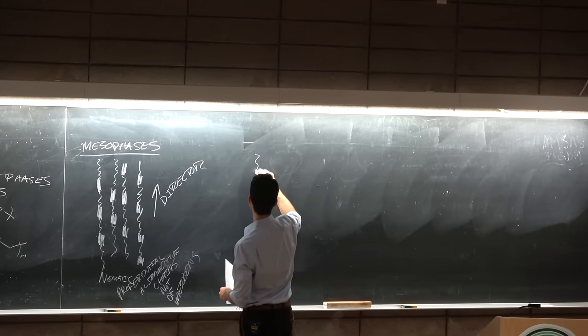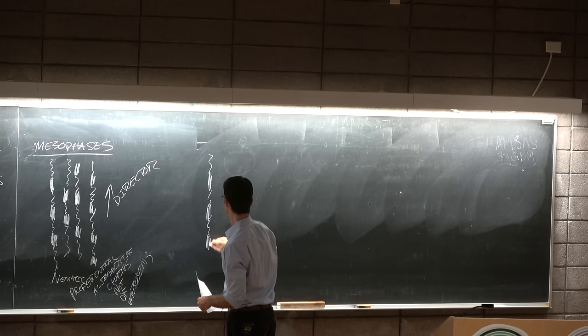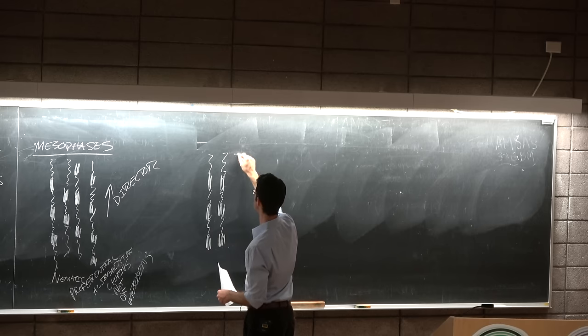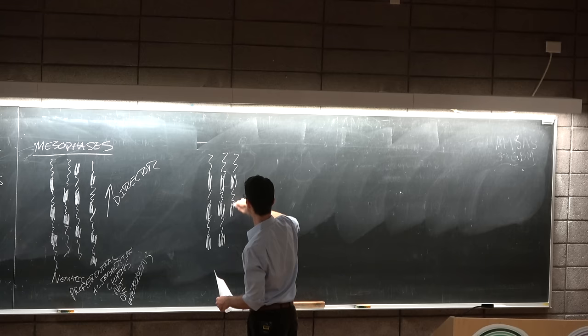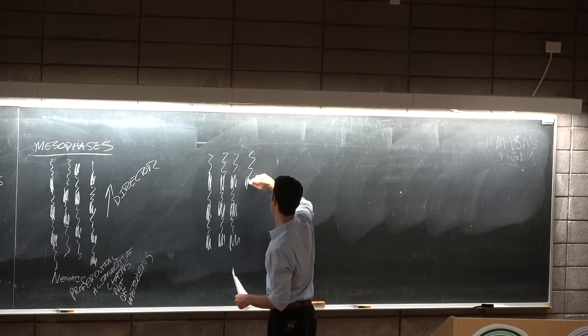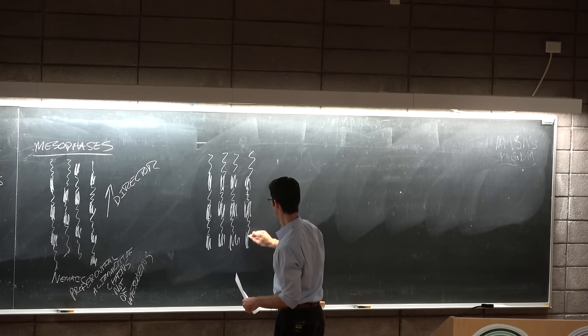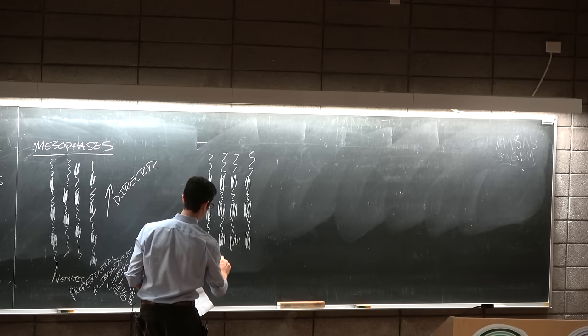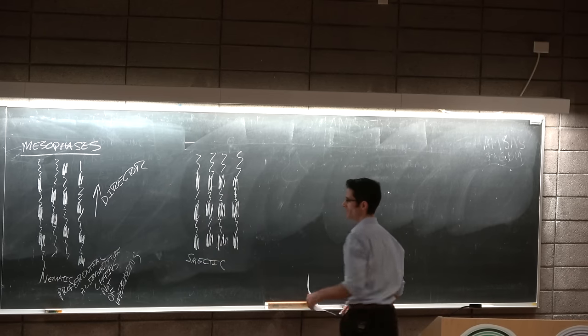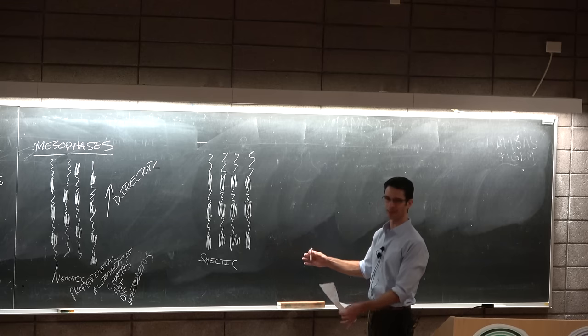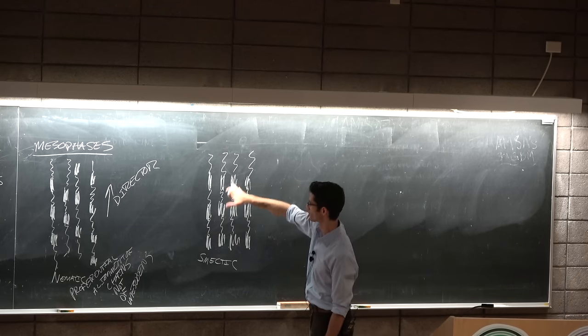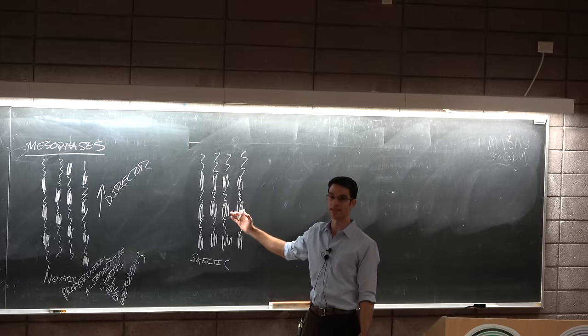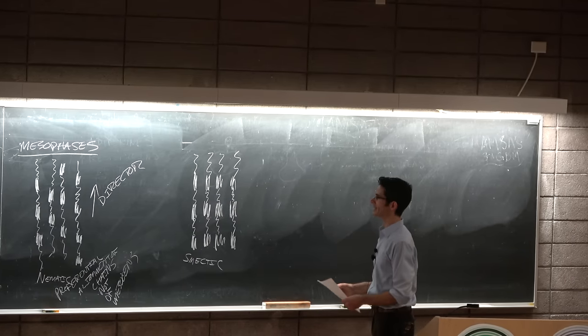And then you have a more ordered phase which as you can imagine has both preferential alignment of chains and preferential alignment of the mesogens. And we call this the smectic phase. And you can have many different smectic sub-phases depending on the polymer but in general they have this director and they have some kind of regular relationship between the mesogens.